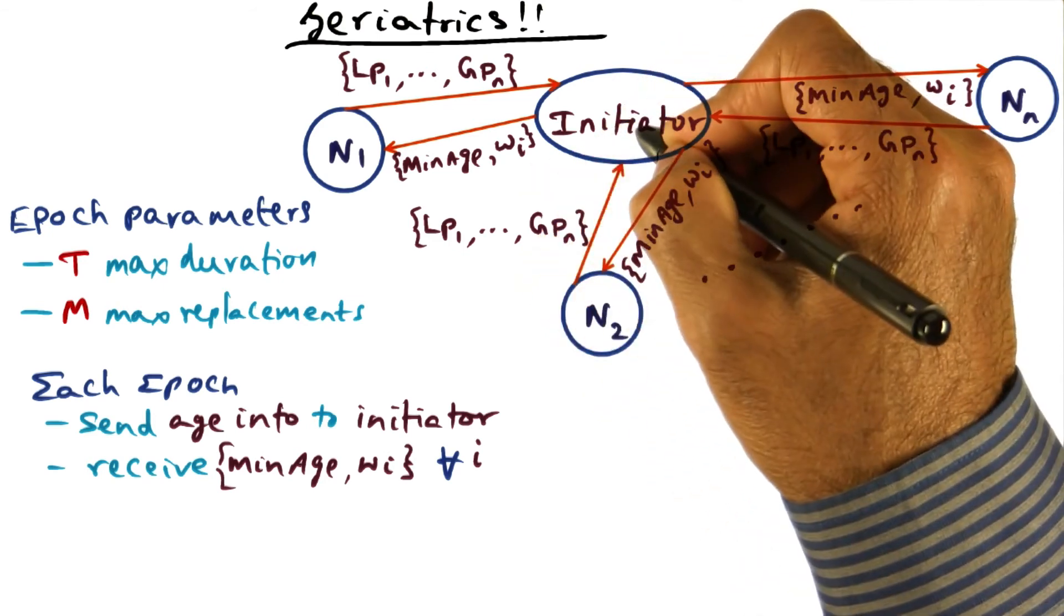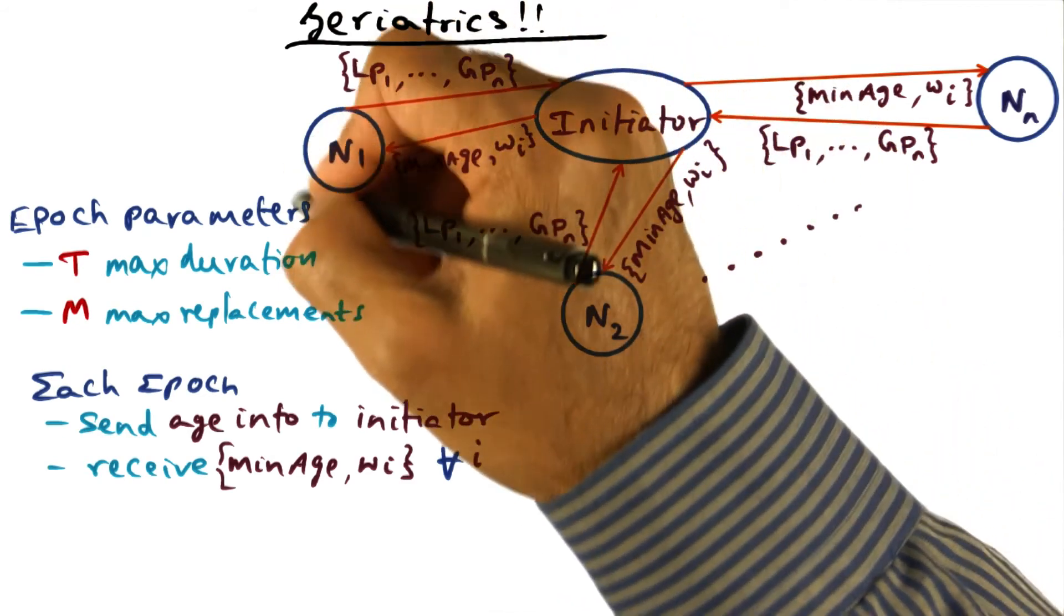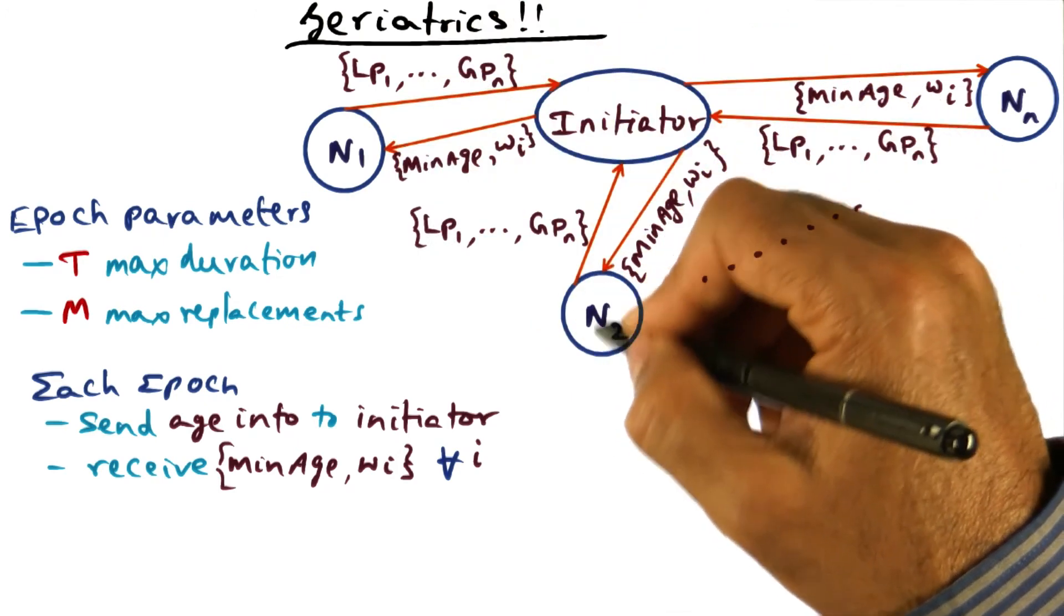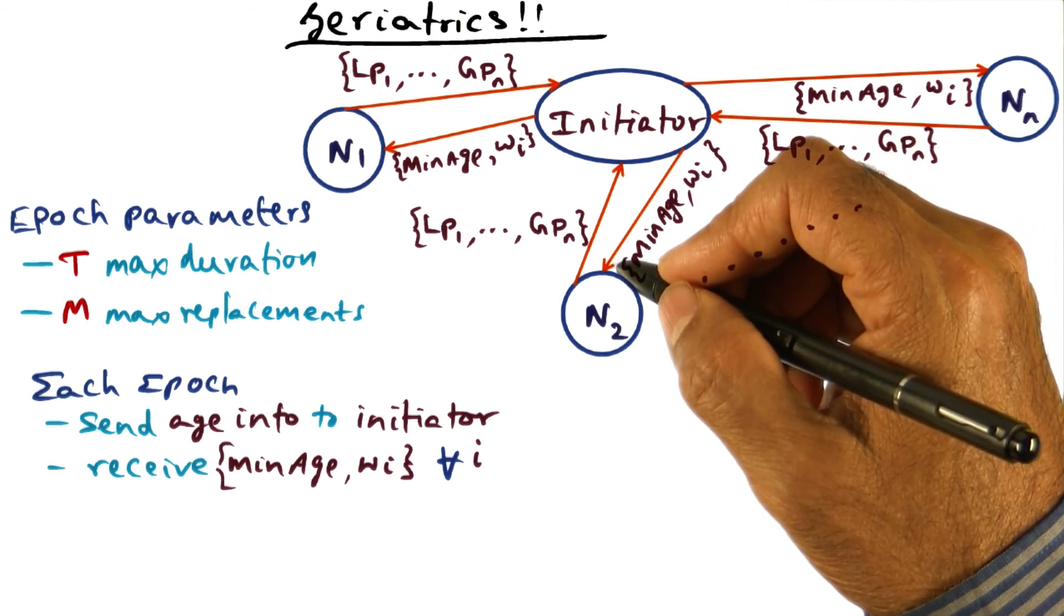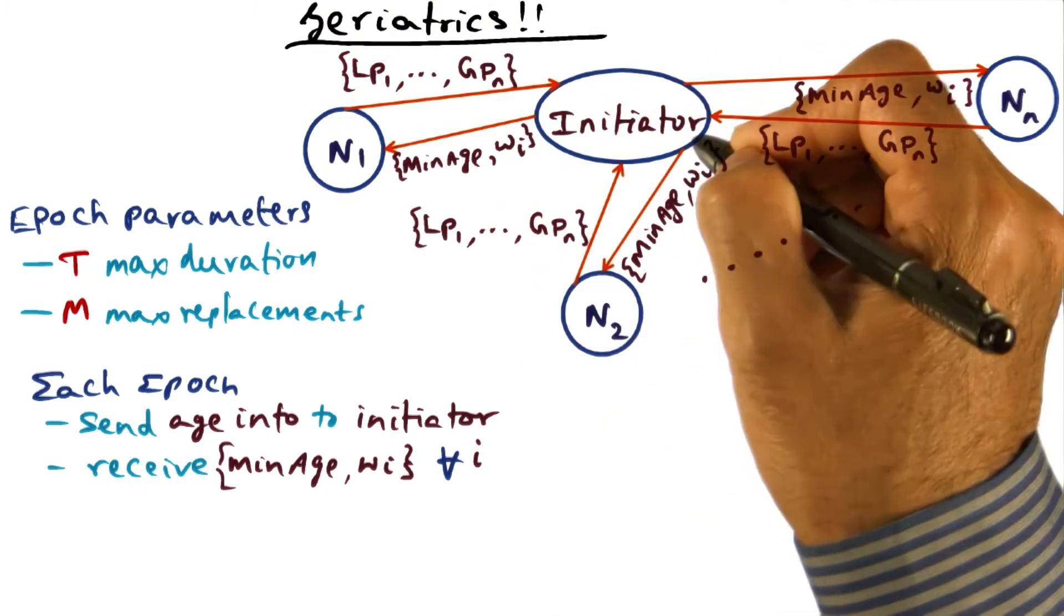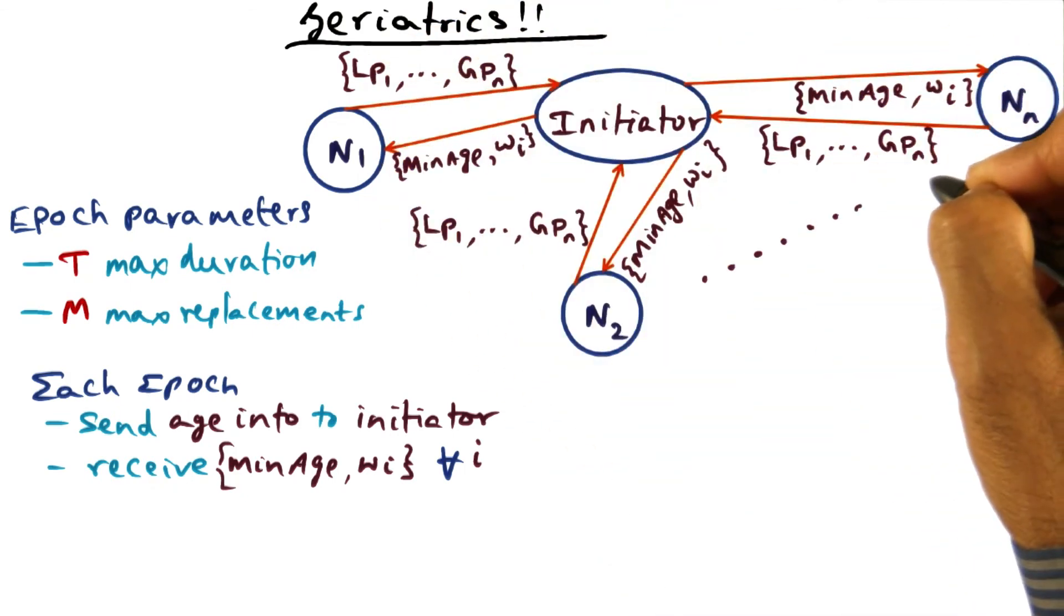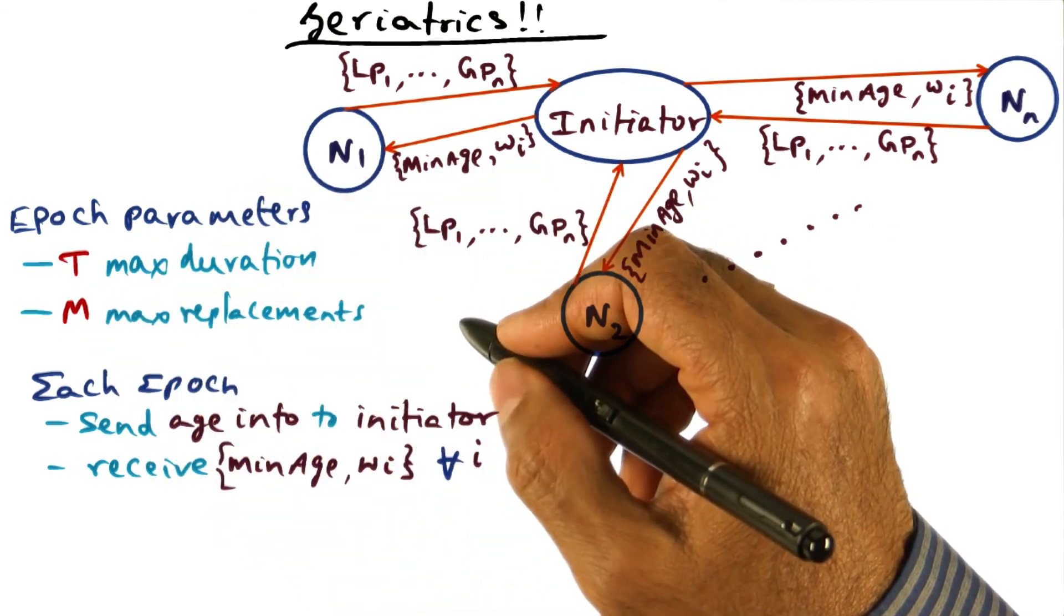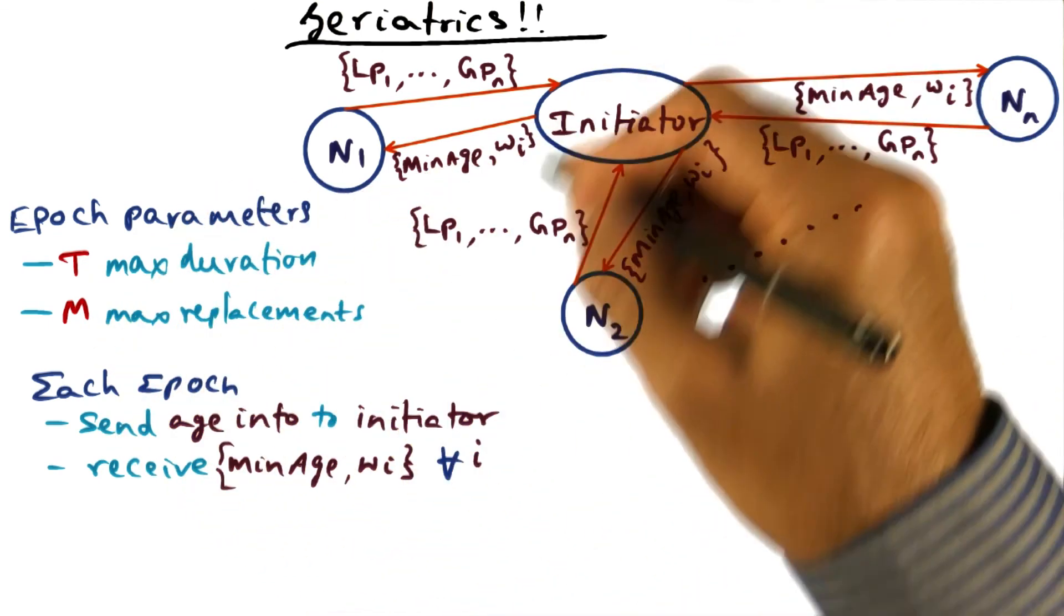And of course, we don't know the future. All that the initiator is doing is it is saying that this is the expected replacement. W1 is the expected share of replacement that's going to happen in N1, W2 is the expected share of replacement that's going to happen in N2 and so on. And when the next epoch starts actually, that can be different depending on what happens in these nodes. But that's the best that we can do is use the past to predict the future. That's what the initiator is doing. It is using the past, the age information that it got from all the nodes in order to predict the future in terms of where these M replacements are going to happen. What is the minimum age of the pages that are going to be replaced in the next epoch.